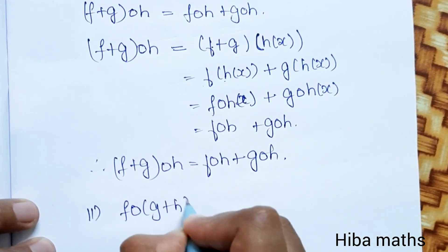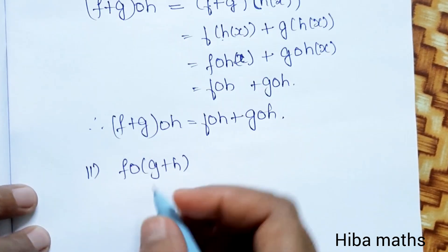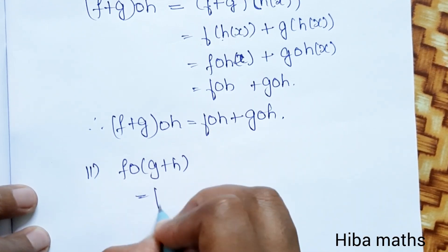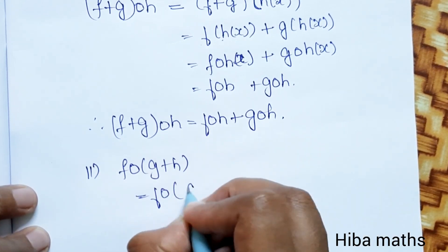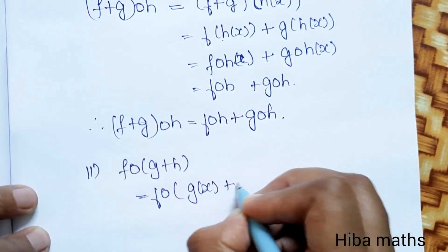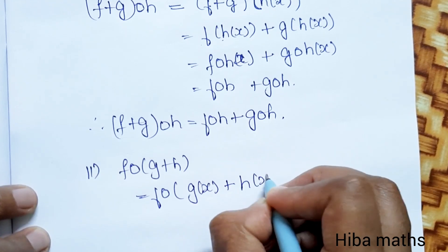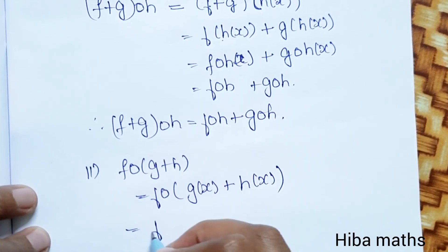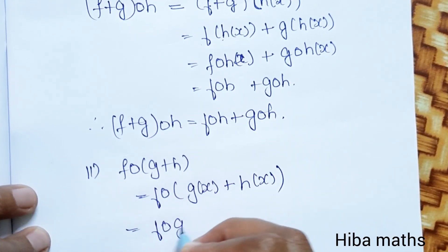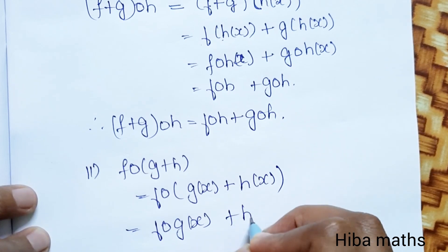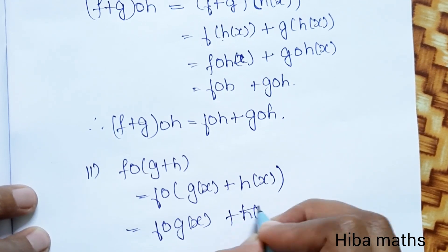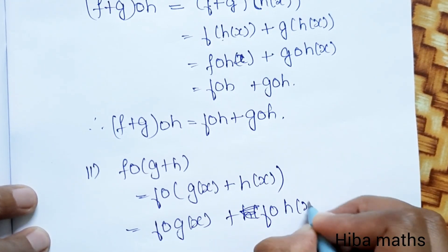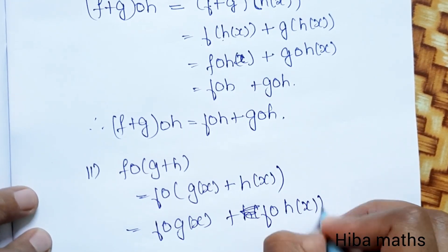Now for f of (g+h): this is equal to f of (g(x) + h(x)). Note that this is inside a single f, so it becomes f of (g(x) + h(x)), which is not the same as f of g(x) plus f of h(x).